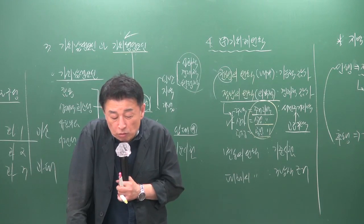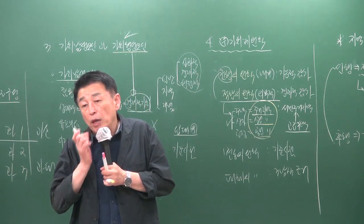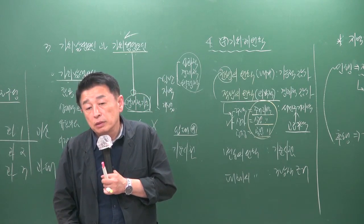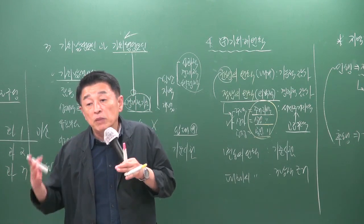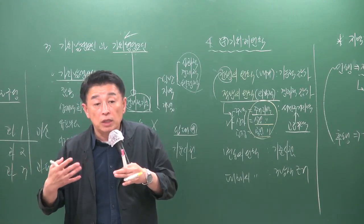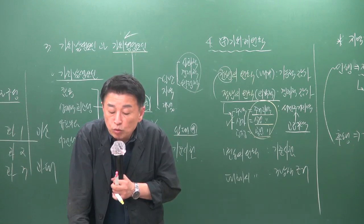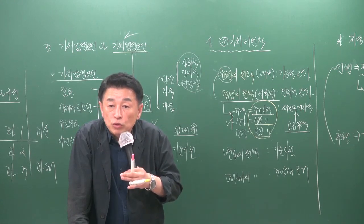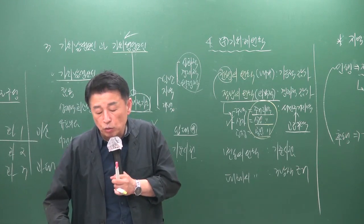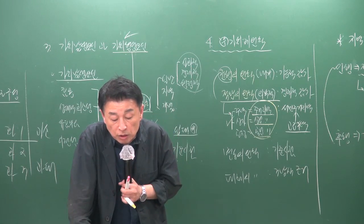용도별 동일수급권 파악에서 주거지는 통근 가능한 지역 범위를 기준으로 하고, 상업지는 배후지(상권)를 기준으로 합니다. 고도 상업지역의 경우 배후지가 전국적인 범위로 확대될 수 있습니다. 예를 들어 남대문시장은 전국에서 상인들이 오므로 범위가 전국적입니다. 후보지와 이행지의 동일수급권 범위는 일반적으로 전환 후를 기준으로 하되, 성숙도가 낮으면 전을 기준으로도 파악할 수 있습니다.